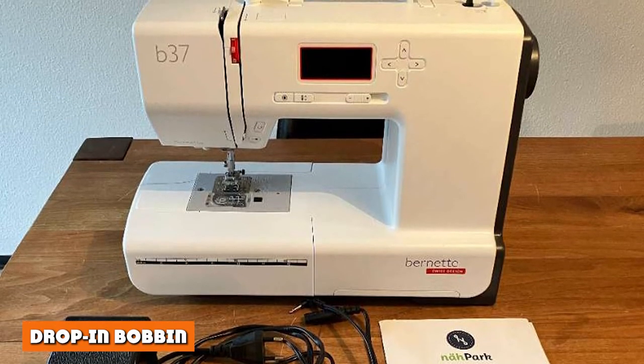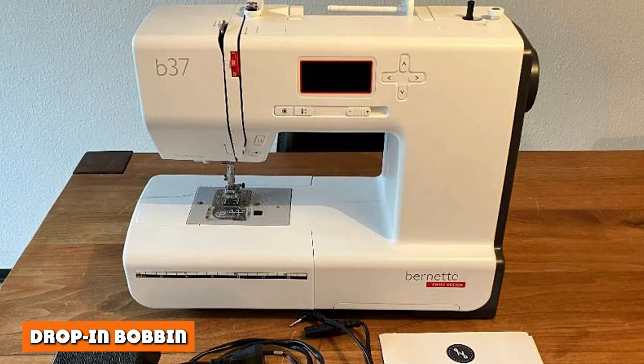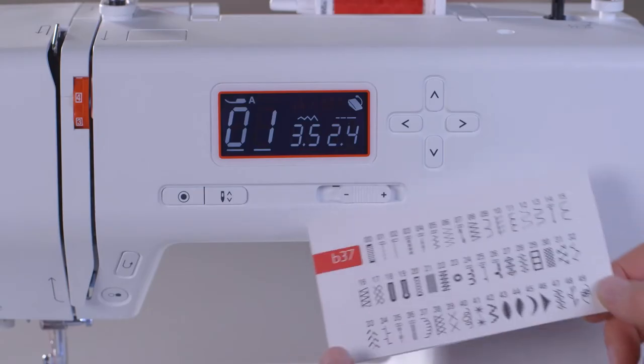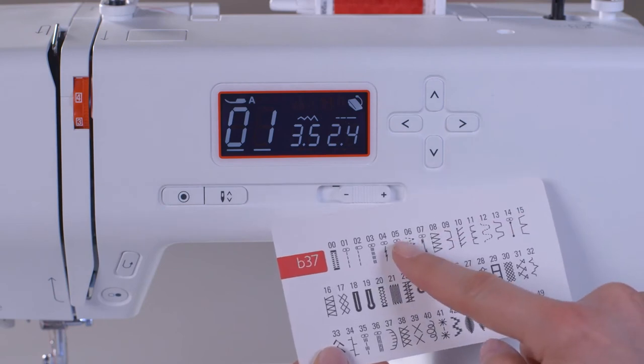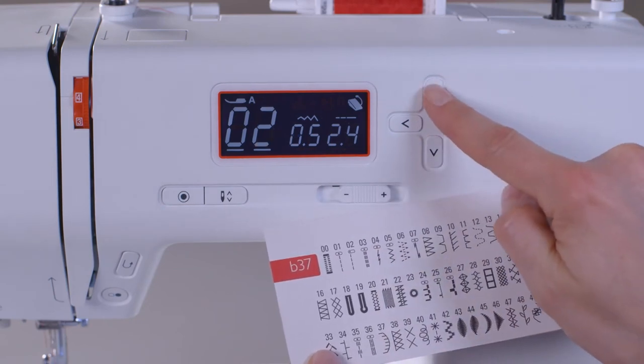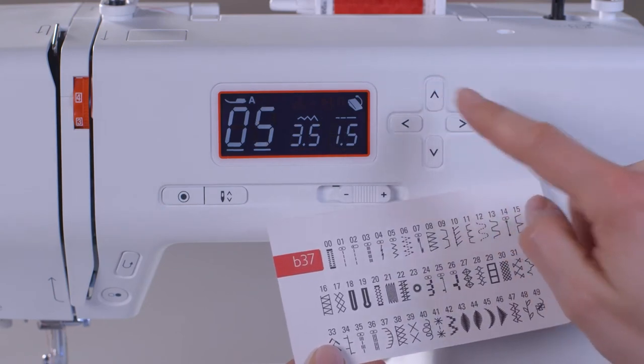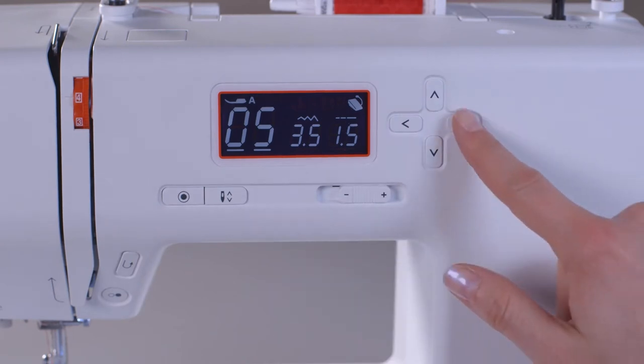This Bernett sewing machine has a drop-in bobbin. As such, instead of finding the bobbin in a compartment underneath the needle plate, hidden away, it's right in prime view. This makes it easy to access for rethreading and simple to check for any problems, such as jamming.